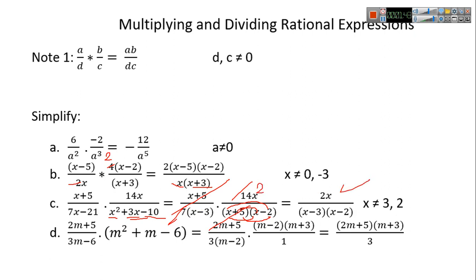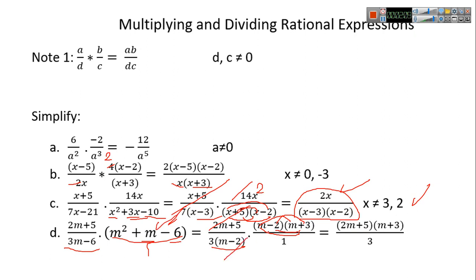The result is 2x over (x−3)(x−2), and x cannot be 3 or 2. For the next part, factor m²−m−6 using m−2: m times m gives m², and −2 times 3 gives −6. Check middle term: 3m−2m = m, which is correct. So m²−m−6 = (m−2)(m+3). After cancellation, the result is (2m+5)(2m+3) over 3.